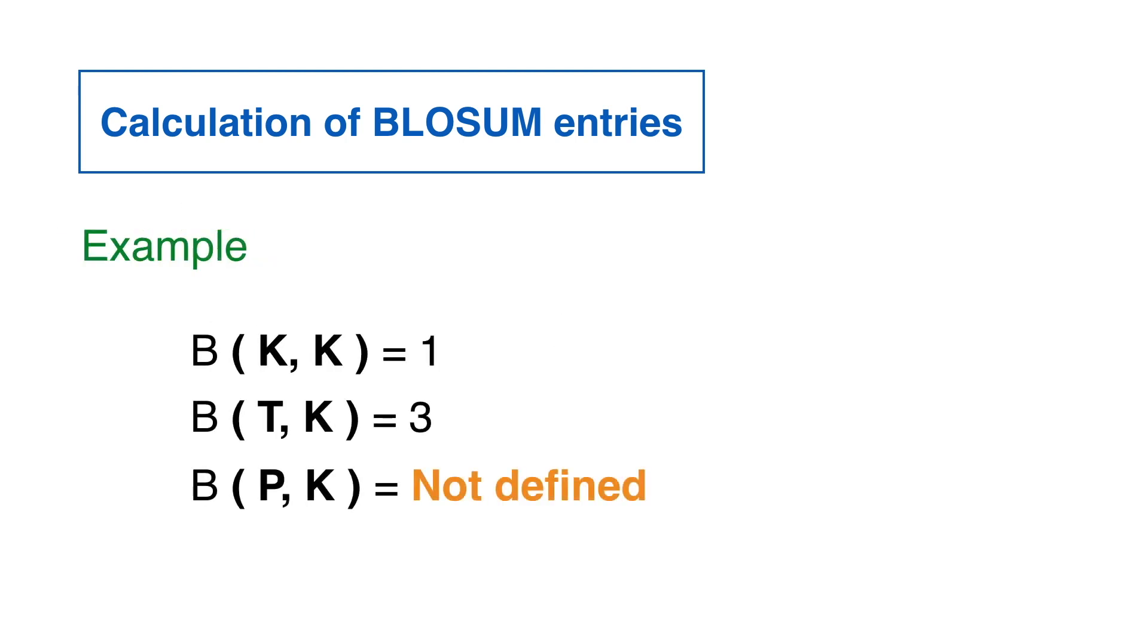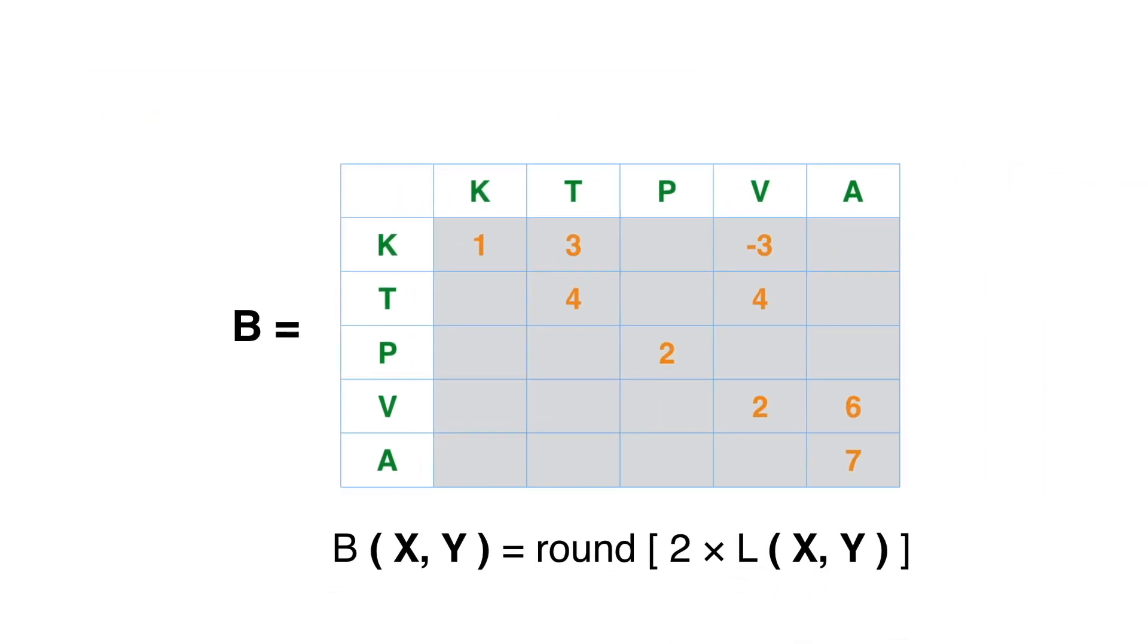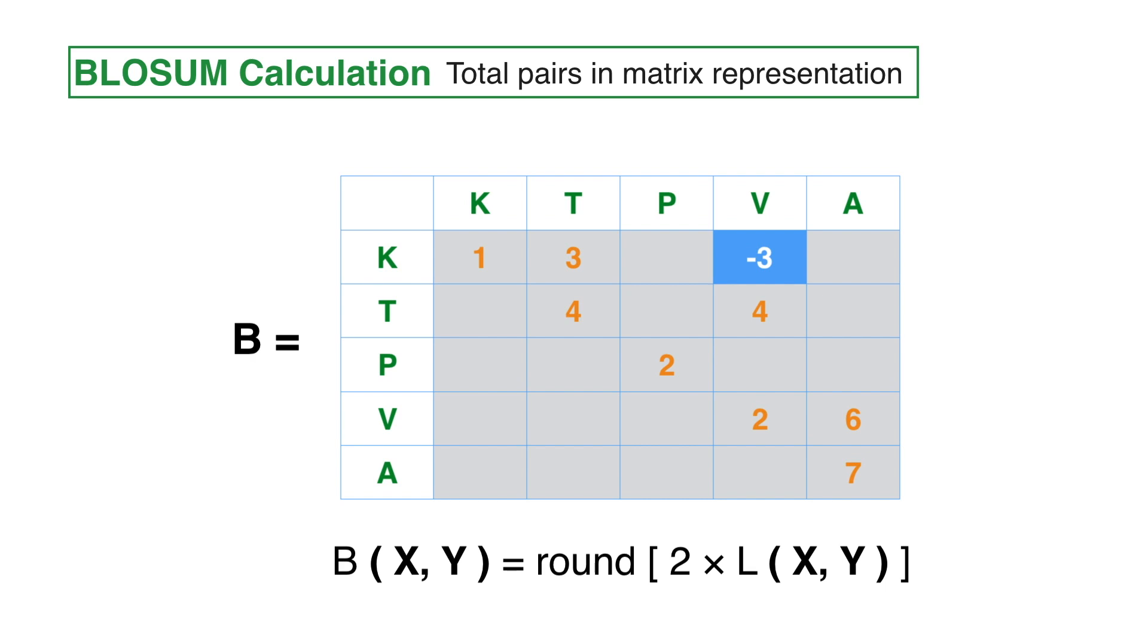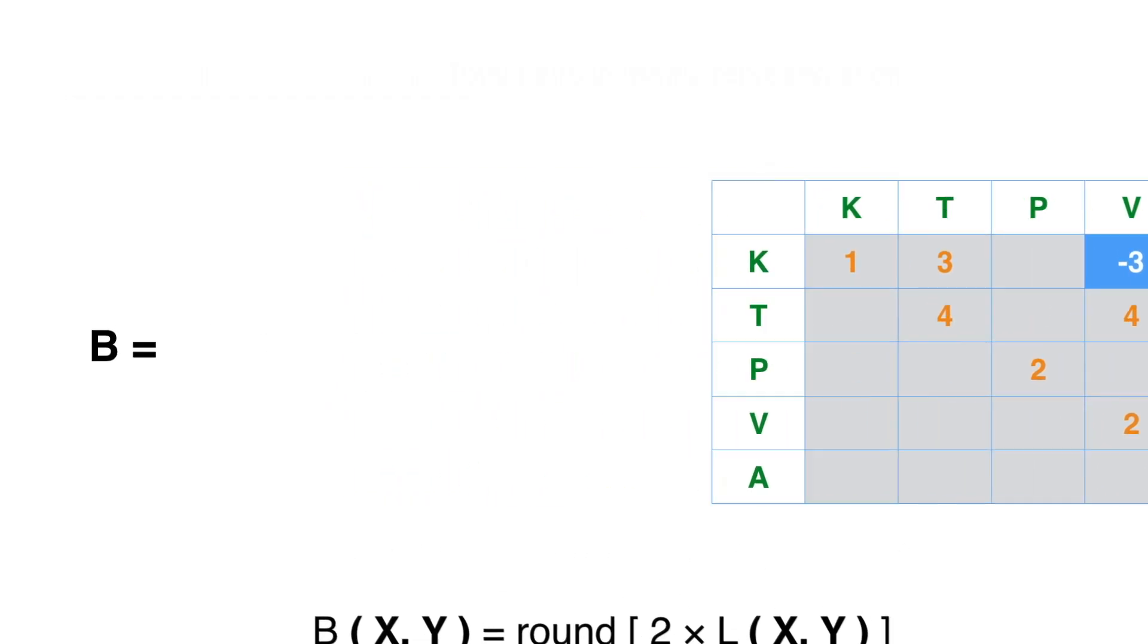It is worth pointing out that our example is too small to have statistical value. As a matter of fact, according to matrix V, the substitutions of K and T, T and V, and V and A are likely. The sole substitution that is unlikely is that of K by V. As we will see, this does not occur in real biological substitutions.